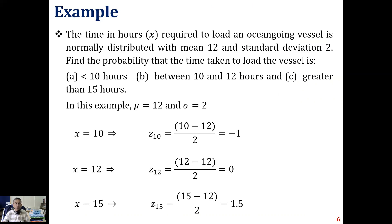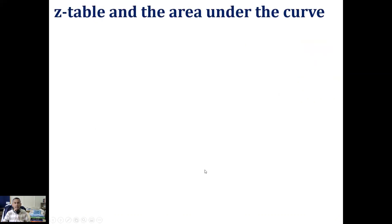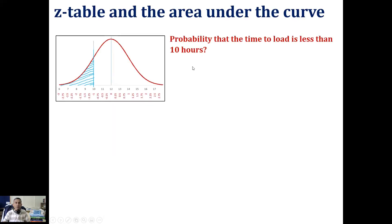Having these z values, we use the z table to calculate the area under the curve and estimate the probabilities. For part (a), P(x ≤ 10) = F(10) = Φ(-1). We recognize that Φ(-z) = 1 - Φ(z) due to symmetry. From the z table, Φ(1) = 0.8413. Therefore, P(x ≤ 10) = 1 - 0.8413 = 0.1587. So the probability that it takes less than 10 hours to load is 0.1587.